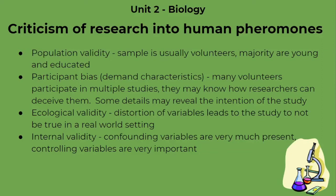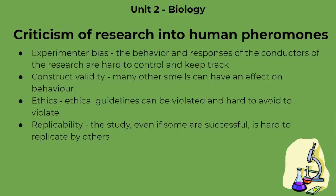Internal validity is also a concern, as confounding variables are very much present in these types of studies, so controlling the variables is very important. Next, we have experimenter bias — the behavior and responses of the researchers or assistants in the research are hard to control and keep track of, so their responses could introduce bias.